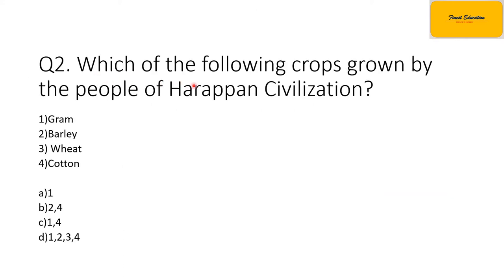Question number 2: which of the following crops were grown by the people of Harappan Civilization? Option A: gram only. Option B: barley and cotton. Option C: gram and cotton. Option D: gram, barley, wheat and cotton. All of these were grown during that period, so the correct option is definitely option D.